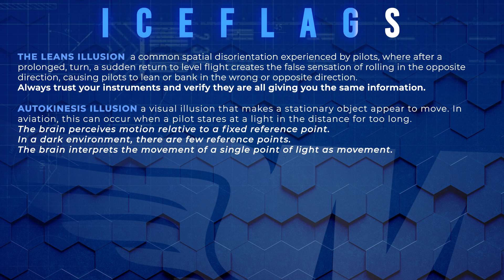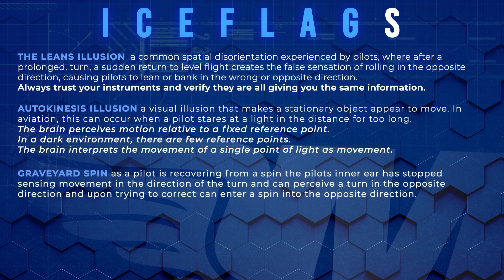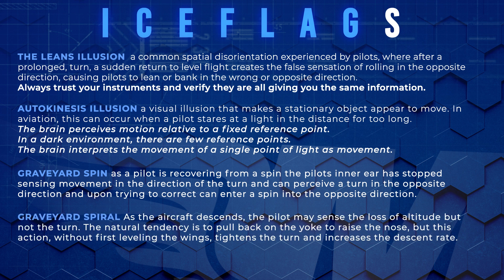G is for graveyard spin and graveyard spiral. A graveyard spin is when a pilot recovering from a spin in which the inner ear has stopped sensing the turn may have the illusion that they have entered a spin in the opposite direction. A graveyard spiral is when a pilot experiences the illusion of not turning after being in a constant turn for an extended period of time. Returning to straight and level flight causes the sensation so that the pilot turns back into the original turn.